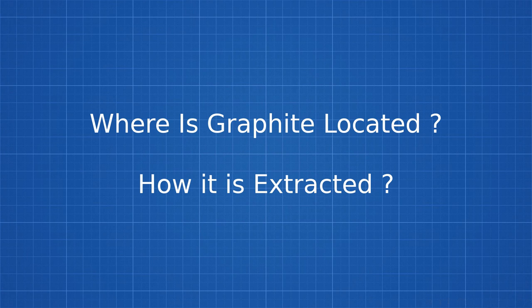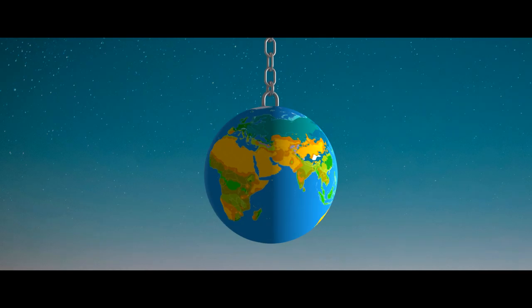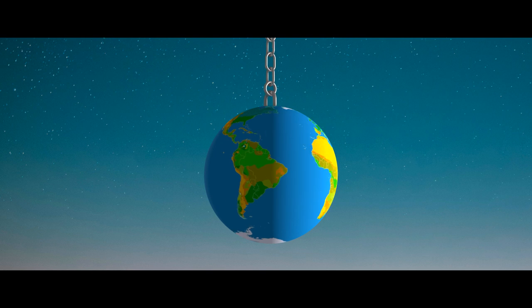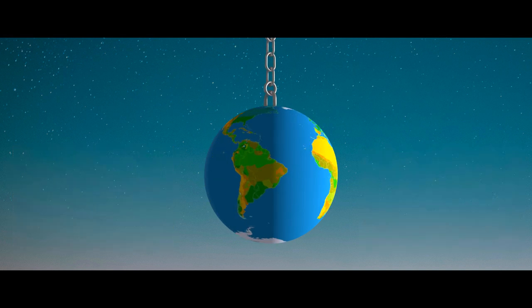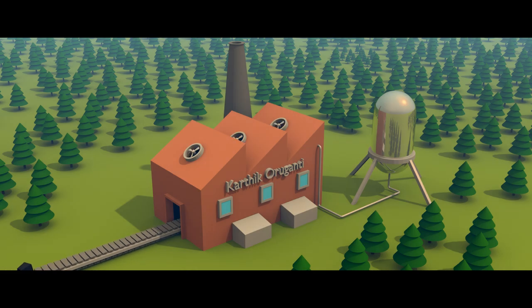So the question is, where is graphite located and how is it extracted? The graphite mines are located all around the world. However, the distribution of mines is not equal. Graphite is extracted using both open pit and underground mining methods. After extracting the graphite ore, it is sent to the factory.